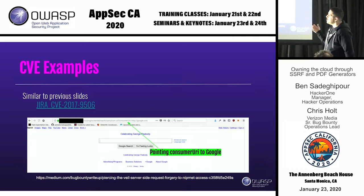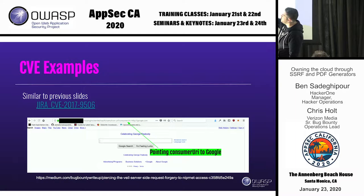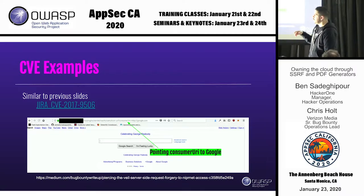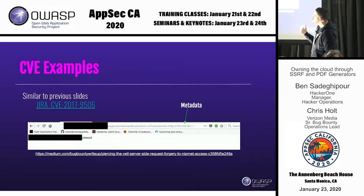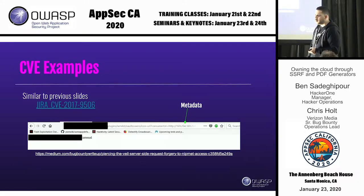Some CVE examples. This very popular one — unfortunately I still see it happening today, two to three years later — is for JIRA. Very straightforward: all you have to do is change the consumer URL parameter. In this case it's pointed to Google and loads Google server-side instead of in your browser. You can verify that by popping an XSS or sending it to your own box and seeing where the IP comes from. You can then change that to the metadata instance. Alyssa Herrera, one of the top hackers on HackerOne, did this to the Department of Defense, querying the internal hostname for that box.